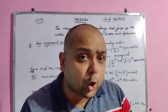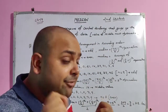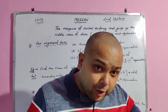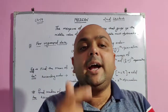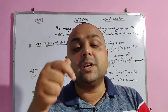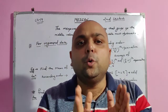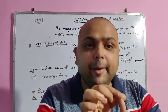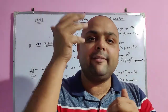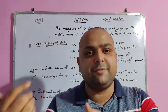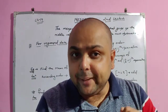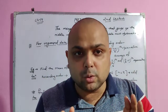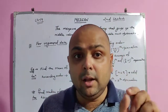If n is even, median is calculated by first arranging the data in ascending order, then taking the average of the (n/2)th and (n/2 + 1)th observations. For example, if n is 10, median is the average of the 5th and 6th observations. If n is 15 (note: likely meant n=50), median is the average of the 25th and 26th observations divided by 2.